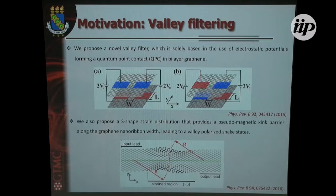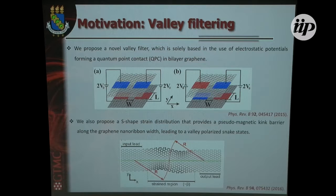That means that in each valley, you have an electron with — for instance in K — a positive group velocity, and in K prime a negative group velocity. I did this for AB stacking. The dispersion relation matters, and I will show this in the next slide, because AB stacking has a parabolic spectrum and when you apply this bias, you open a gap and create barriers, but you have an unbiased channel.